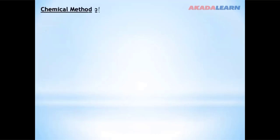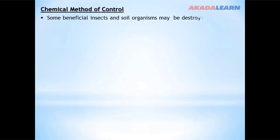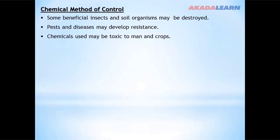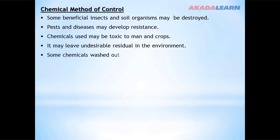For chemical method control: some beneficial insects and soil organisms may be destroyed. Pests and diseases may develop resistance to chemicals. Chemicals used may be toxic to humans and crops, and may leave undesirable residues in the environment. Some chemicals washed out through water and soil erosion may cause pollution to rivers.